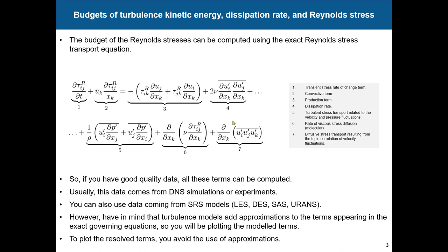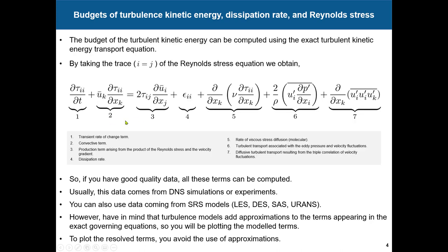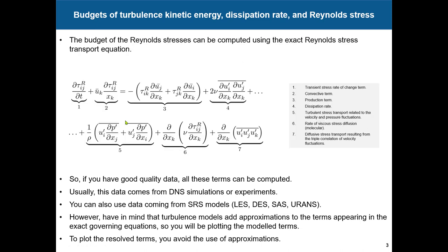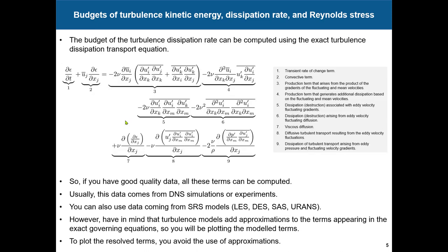To get something like this, you need to go wall-resolving — the mesh you're going to use has a Y-plus of about 15 or 20. We can also plot the budget of the Reynolds stresses to recreate an energy dissipation rate. Each term is a different contribution, and you will need to enable statistics for all these combinations of terms. You'll need to set up triple correlations and also the correlation between velocity and pressure to plot these budgets. You can do this also for the turbulent kinetic energy and the dissipation equation.